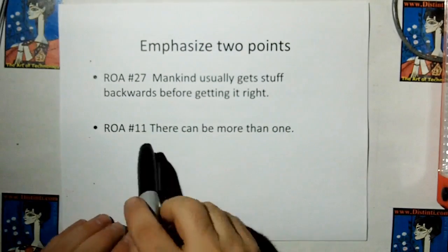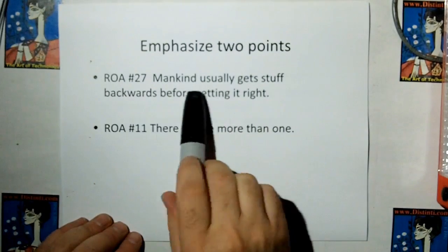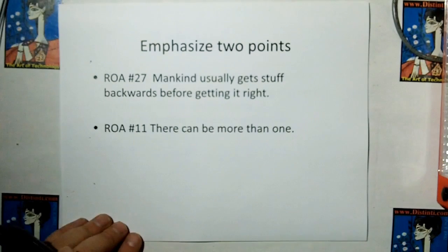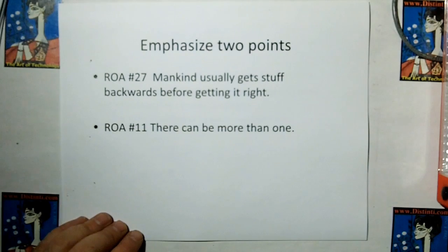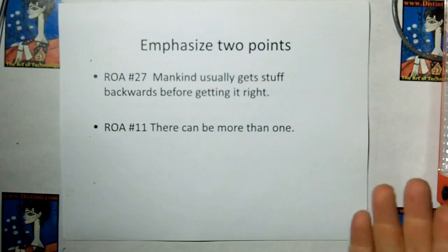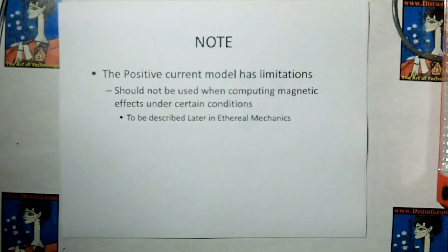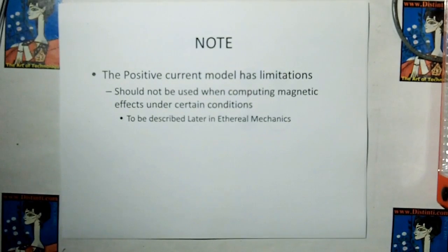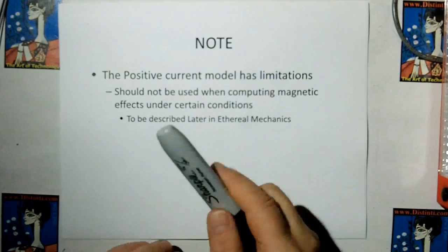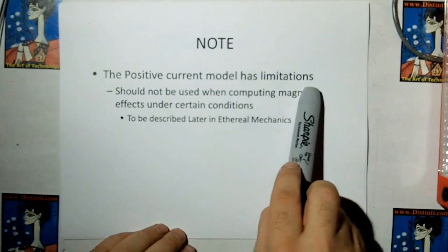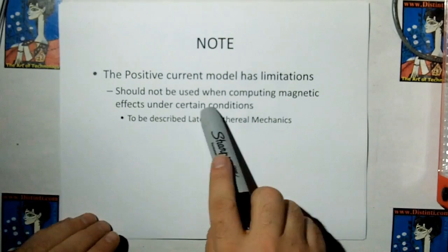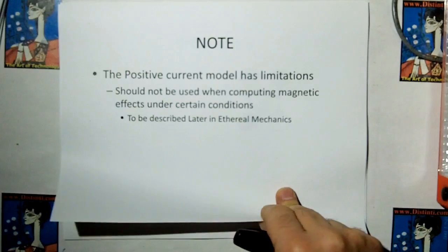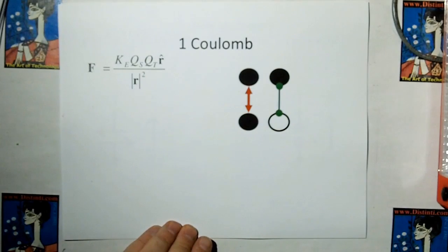But let's emphasize two points here. The rule of acquisition 27, mankind usually gets stuff backwards before he gets it right. Rule of acquisition number 11, there can be more than one model that gives you accurate answers. There's no such thing where there can only be one model and the two different current paradigms are proof positive that there's not one right way to do anything. But now as we go deeper into ethereal mechanics, we're going to show you the positive current model starts having limitations. At the level we're talking, with electronics and electrical engineering, either model works fine. But as we get into later things in the ethereal mechanics, we'll show you that the positive electron model can have problems.